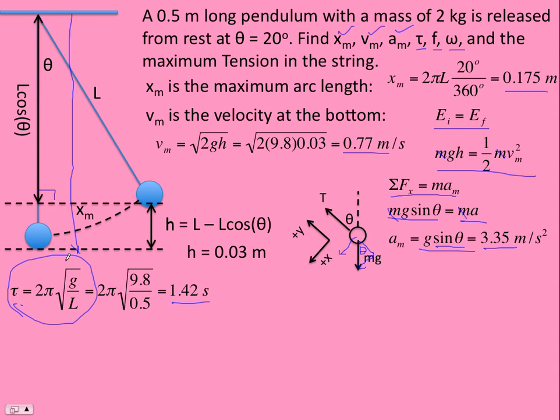And maybe you know the frequency equation. The frequency would be 1/(2π)√(L/g). Either way, you can get whatever the other one is by doing the inverse. So frequency is 1 over the period, and period is 1 over the frequency. And so we get the frequency is 1 over 1.42, about 0.7 hertz.